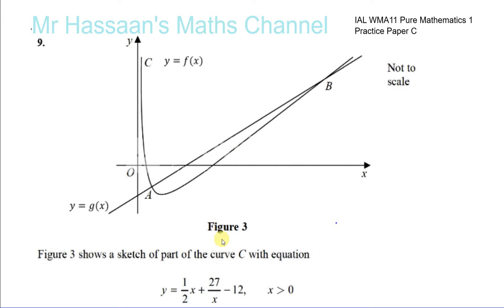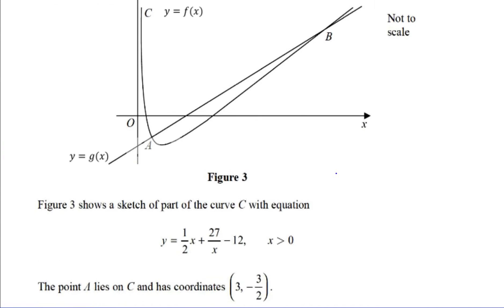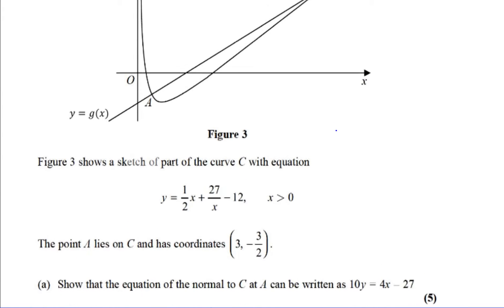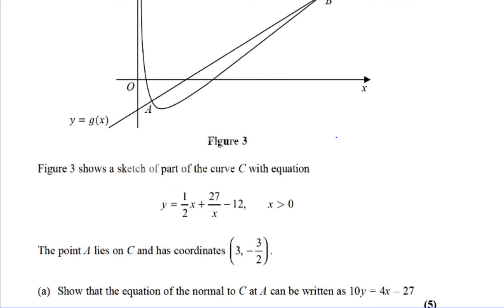Here we're told that we have a sketch of a curve with the equation y equals one-half x plus 27 over x minus 12, and the point A lies on the curve with coordinates (3, -3/2). We've got to show that the equation of the normal to the curve at A can be written as 10y equals 4x minus 27.